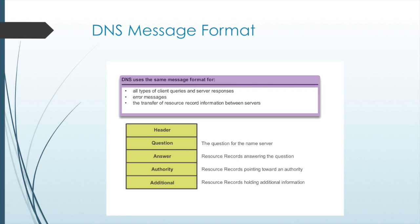The DNS server stores different types of resource records used to resolve names. These records contain the name, address, and type of record. When a client makes a query, the server's BIND process first looks at its own records to resolve the name. If it is unable to resolve the name, it contacts other servers to resolve it. The request may be passed along to a number of servers, which can take extra time and consume bandwidth. After a match is found, the server temporarily stores the numbered address in cache memory. The DNS client service on Windows PCs also stores previously resolved names in memory to optimize performance.